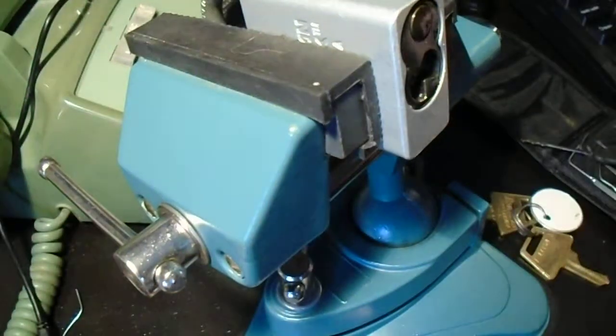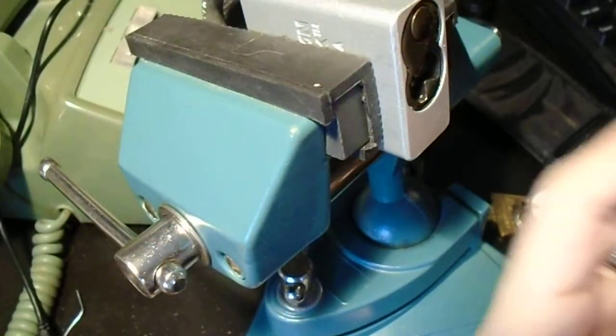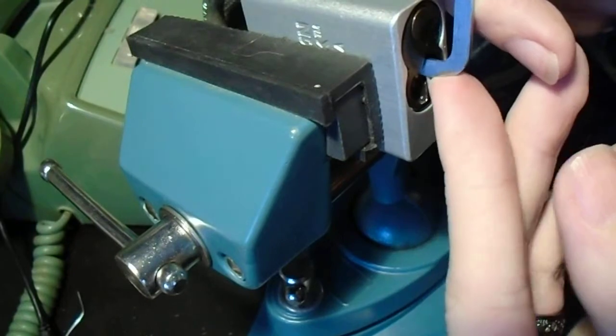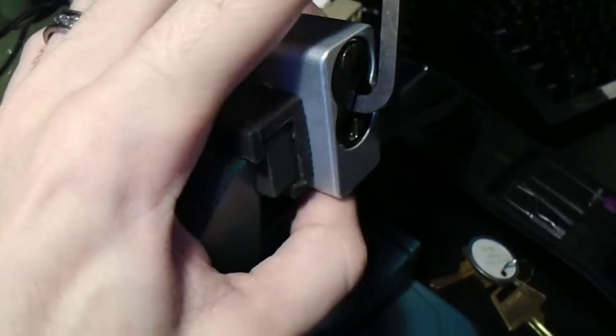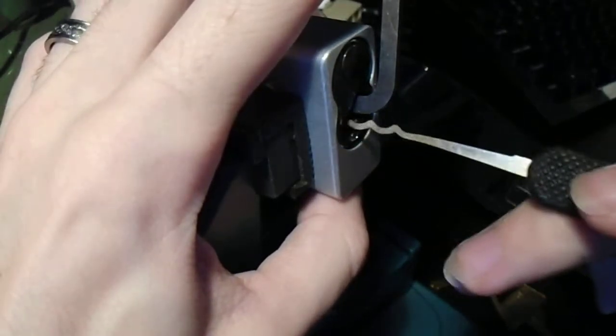So let's see if we can get this one open. This is a 30cc, and the two-digit models are sort of their cheap, low-end non-rekeyables. Let's just see what we can do.